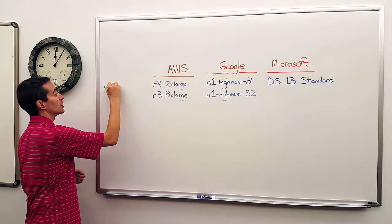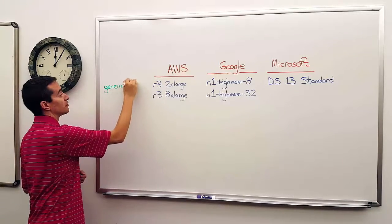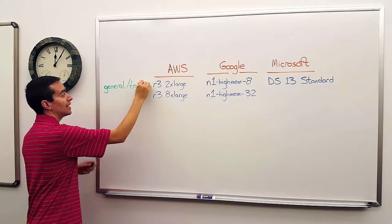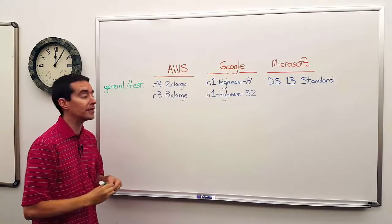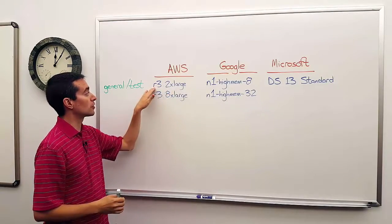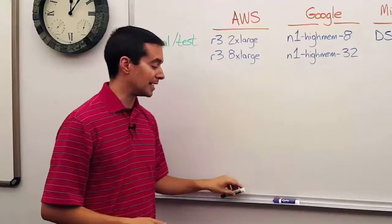Are you using it for just general purpose or are you using it for testing or perhaps archive? If so, then we would recommend the smaller of the two options, the R3 2XL or the N1 HiMem 8.